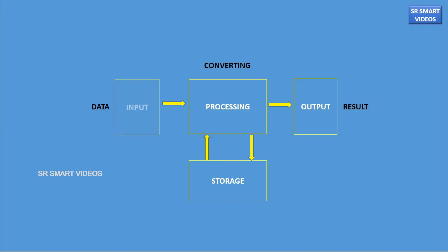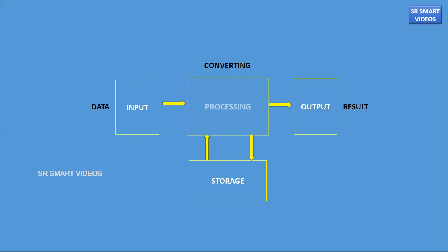Input is considered to be the first function of a computer system. This is the process of entering data. Processing is one of the main functions of the computer system. This is the process of converting raw data into useful information.